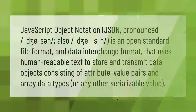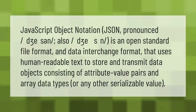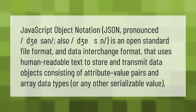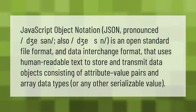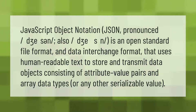JavaScript Object Notation (JSON), pronounced "Jason" or also "Jay-son", is an open standard file format and data interchange format that uses human-readable text to store and transmit data objects consisting of attribute-value pairs and array data types, or any other serializable value.